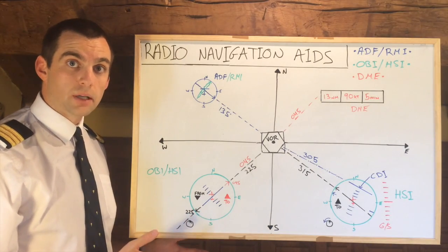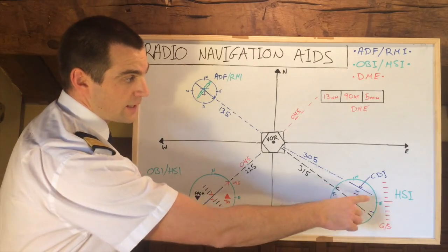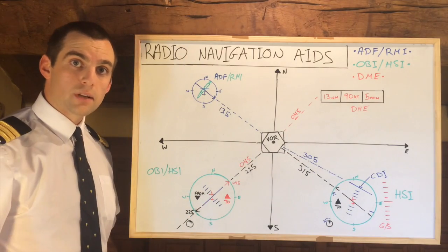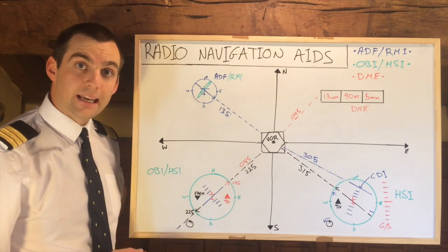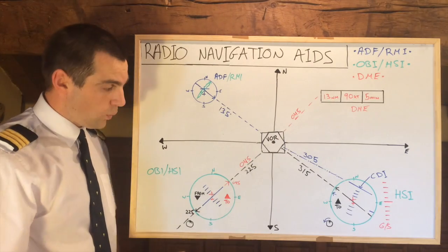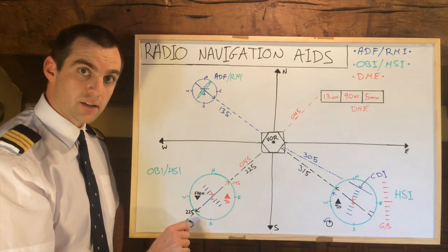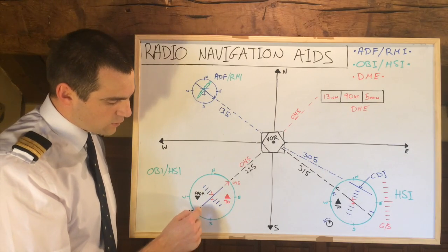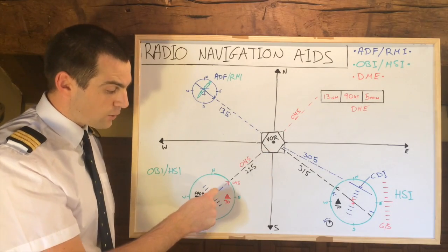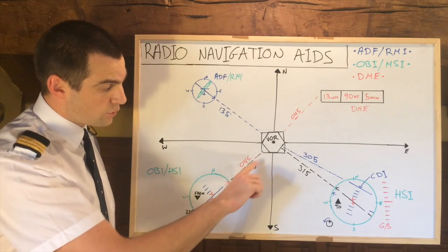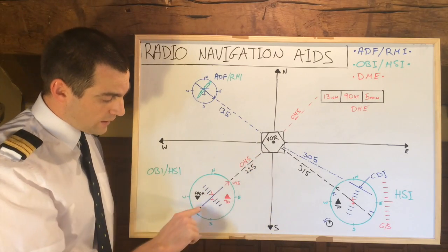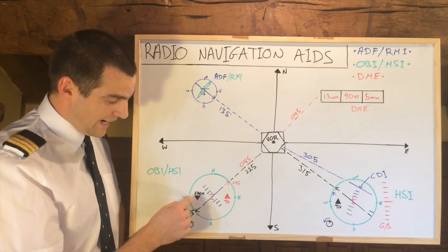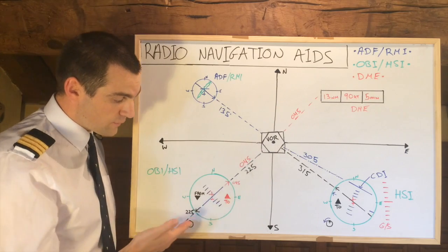HSIs and OBIs work similarly, and what most people find hard is understanding the CDI — the Course Deviation Indicator — which shows deviation from the course selected. To find out where you are on both these instruments, you need to center the CDI by turning the course selector. It will be centered in two places: with the arrow pointing to the station, and with the arrow pointing directly away from it. In this example, we are on radial 225, so if we turn the course selector to 225, the CDI will be centered, indicating radial 225, and the arrow would indicate 'from' — because it is 225 from the station.